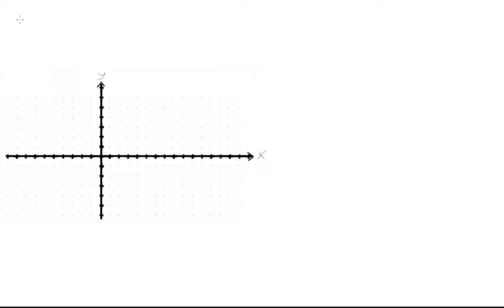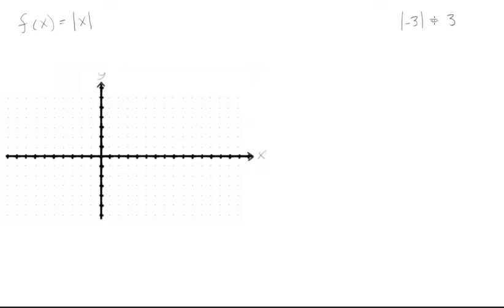Today we're going to talk about absolute value functions. An absolute value function looks like f(x) = |x|. The absolute value is just how far that value is away from 0. So the absolute value of -3 would be 3 units away from 0, so its absolute value is 3. The absolute value of -x equals x, and likewise the absolute value of 3 equals 3, or the absolute value of x equals x.